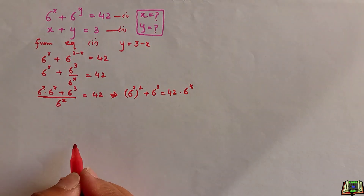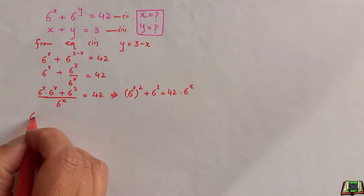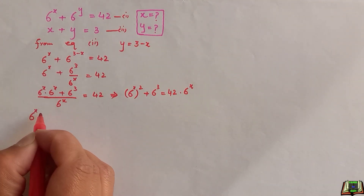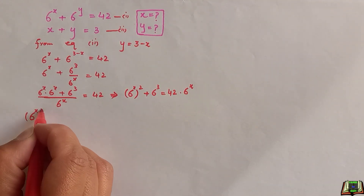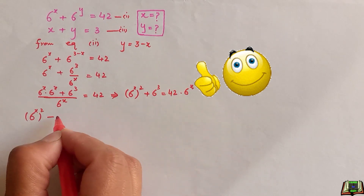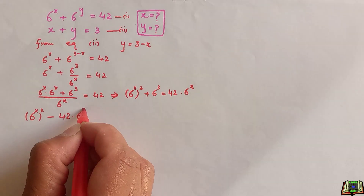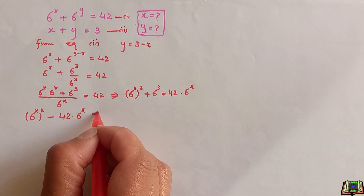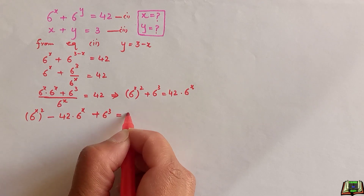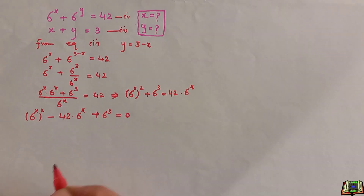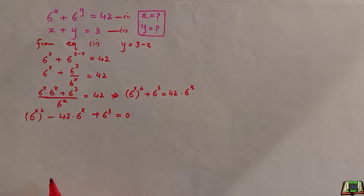After rearranging, we can write it as: (6 to the power x) squared minus 42 times (6 to the power x) plus 6 to the power 3 is equal to 0. This is now a quadratic equation and we are going to use the quadratic formula to solve it.